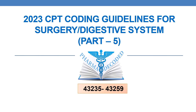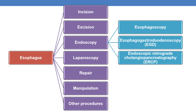Hello everyone. Now let us discuss the 2023 CPT coding guidelines for surgery of the digestive system, part 5. In the current session, we will be focusing on CPTs in the range 43235 to 43259. As we have discussed earlier, the esophagus is divided into incision, excision, endoscopy, laparoscopy, repair, manipulation, and other procedures. In the current session, we will be focusing on the endoscopy subtopic: esophagogastroduodenoscopy, or EGD.